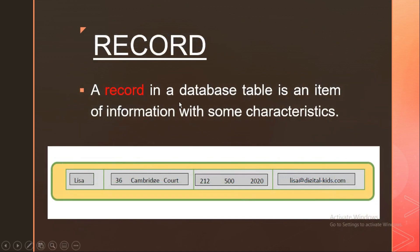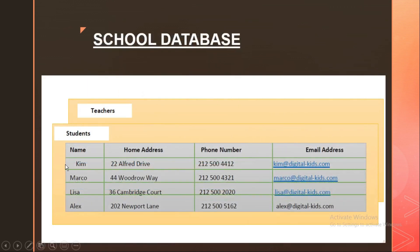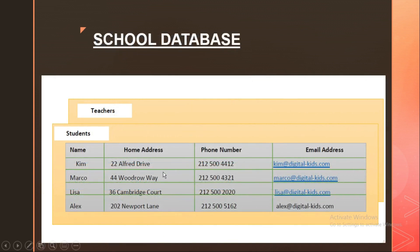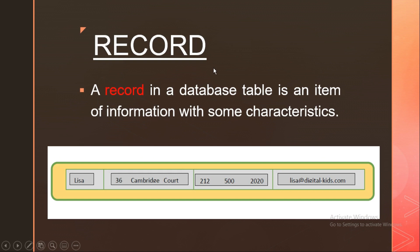Now we are moving on to record. A record in a database table is an item of information with some characteristics. In the previous table, Kim's row is Kim's record — this row is called a record. Kim, his address, his phone number, his email ID. Similarly, Lisa's row — Lisa's address, phone number, and email ID — is Lisa's record. A single row is called a record. So each individual row for Marco, Lisa, and Alex is a record. We have tables that form the database, and within those tables we have records that are the individual ones.